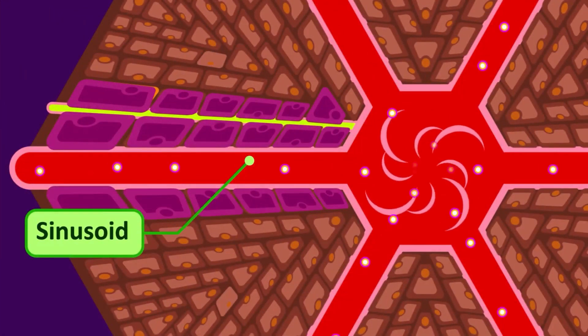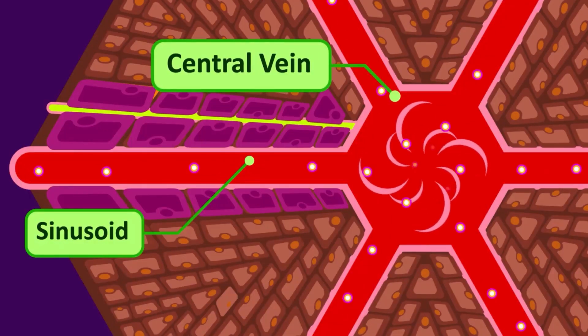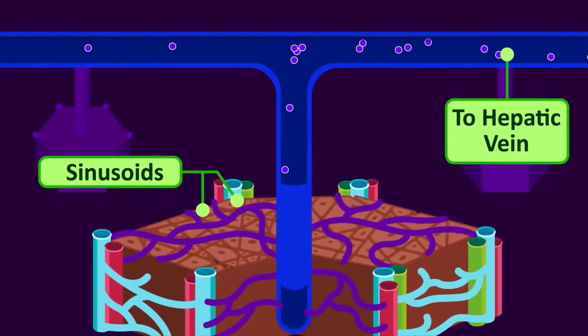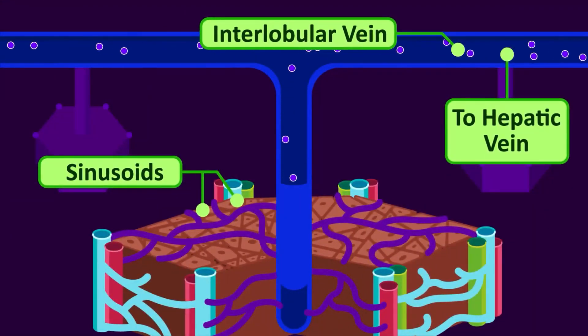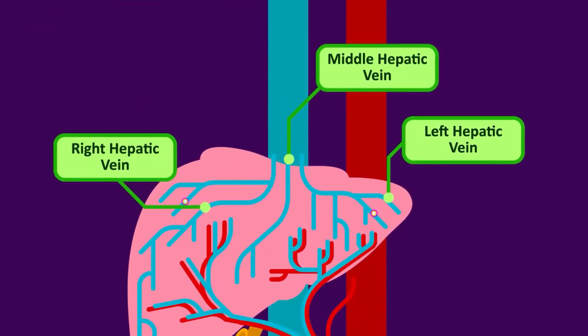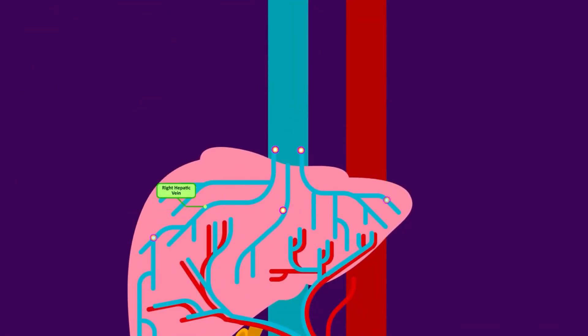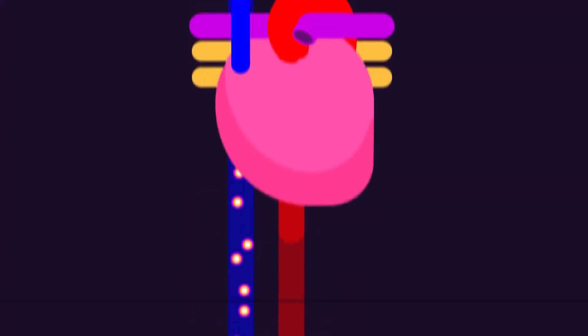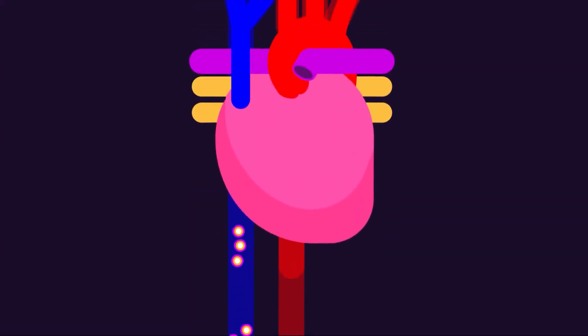When the body needs stored substances, they are released back into the circulation via the central veins. The blood flowing through the liver tissue empties into the central vein of each hepatic lobule, which then merges into the interlobular vein. These coalesce to form mainly three hepatic veins, bringing deoxygenated blood to the inferior vena cava just before it passes through the diaphragm and travels back to the heart.